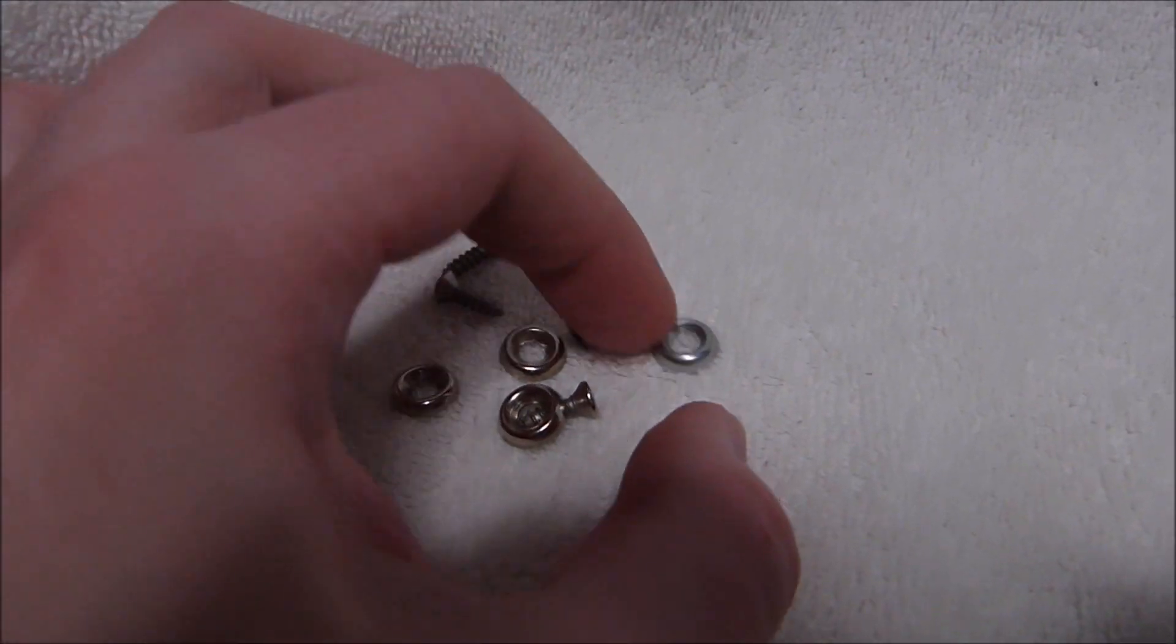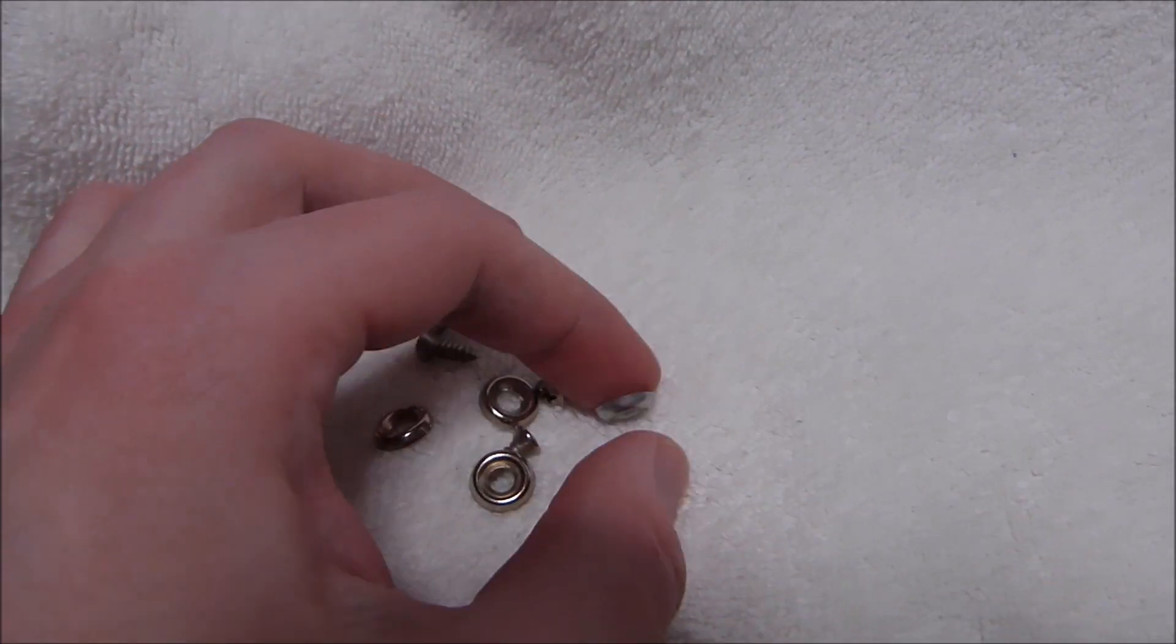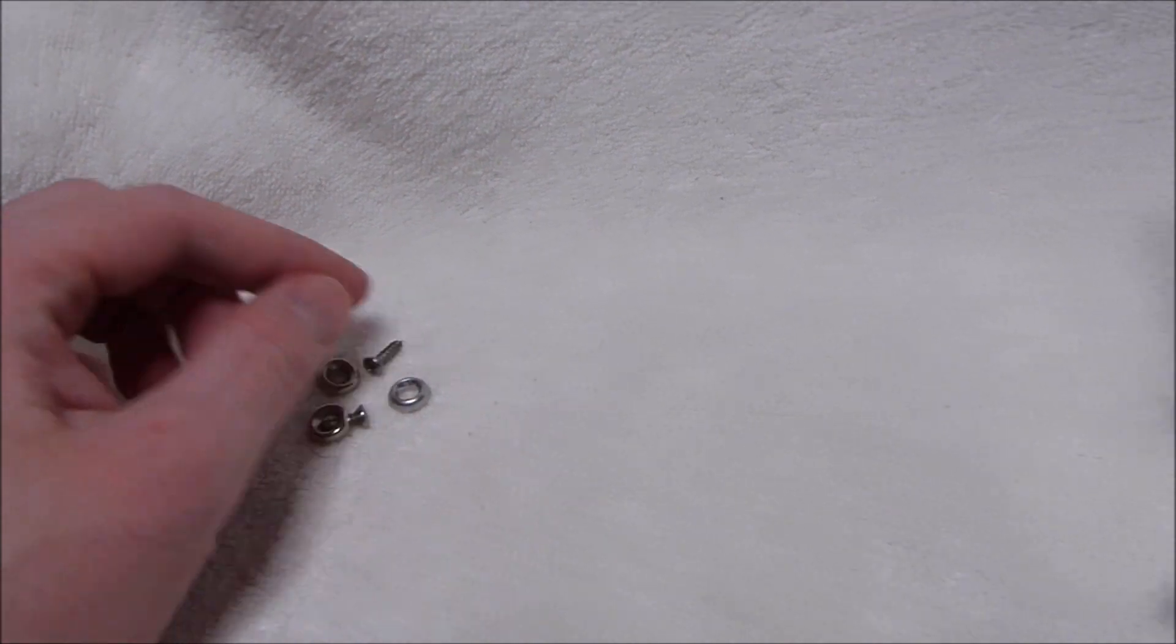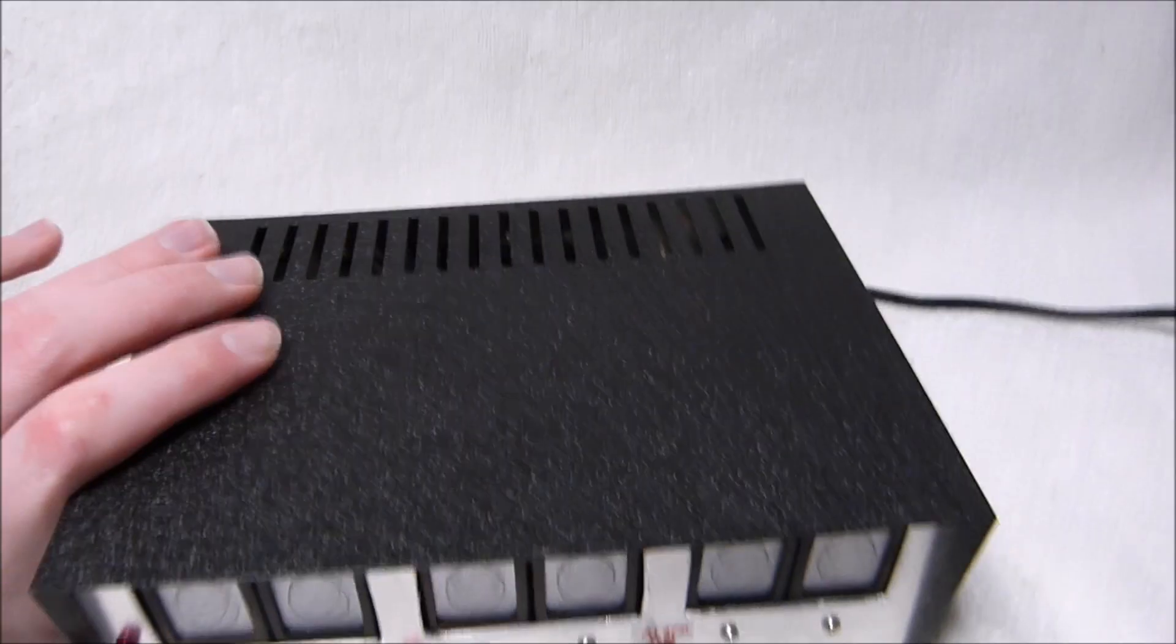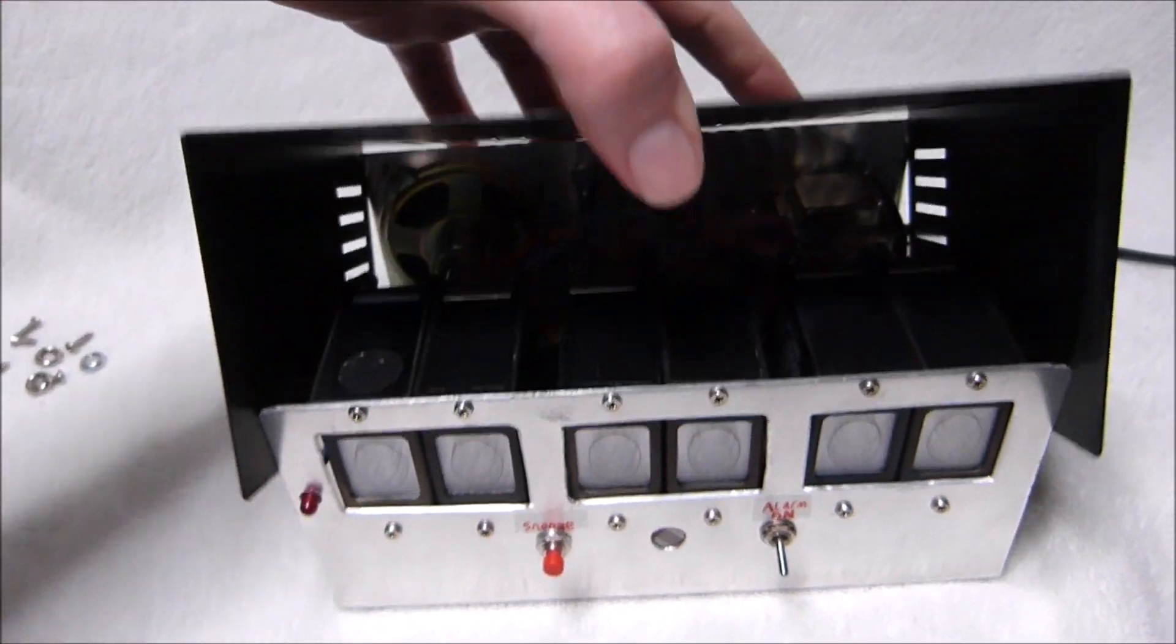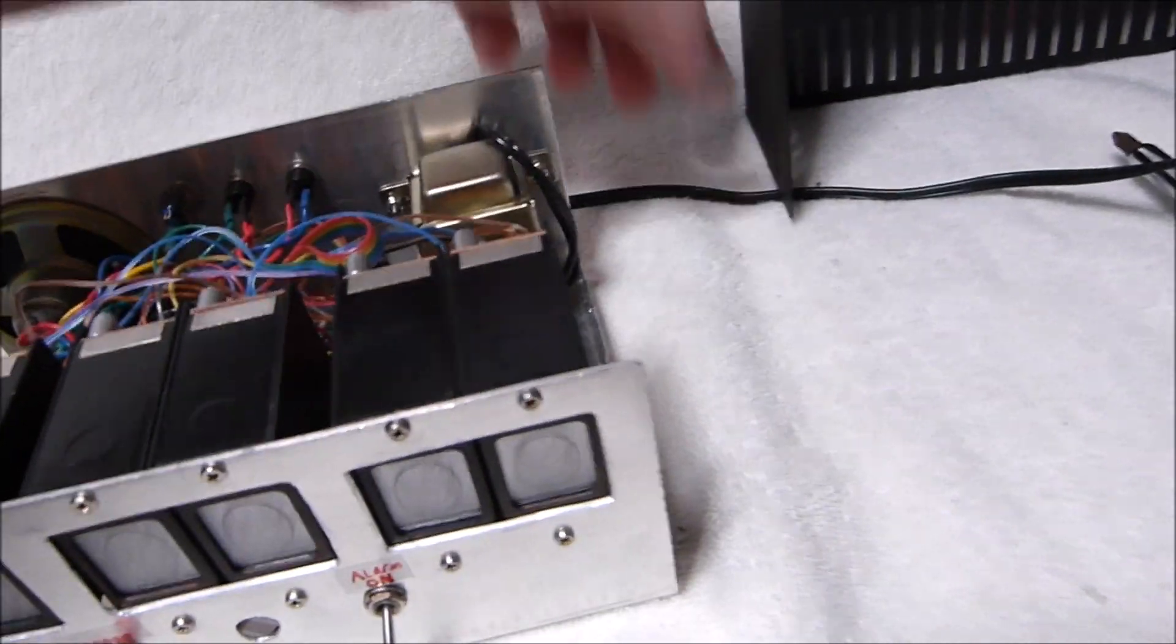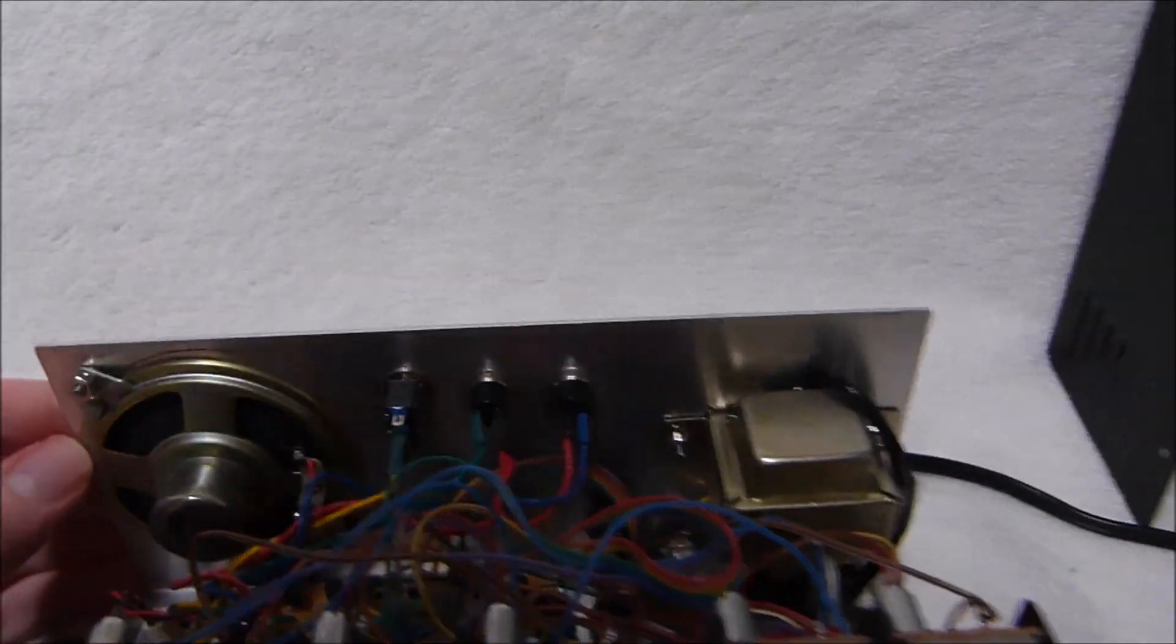Alright, I removed the four screws and washers that were on the sides of the clock. I just noticed that one of them does not match the others. Must have gotten switched around. With those screws out, the cover just lifts off like so. And you can get at the insides of the clock.